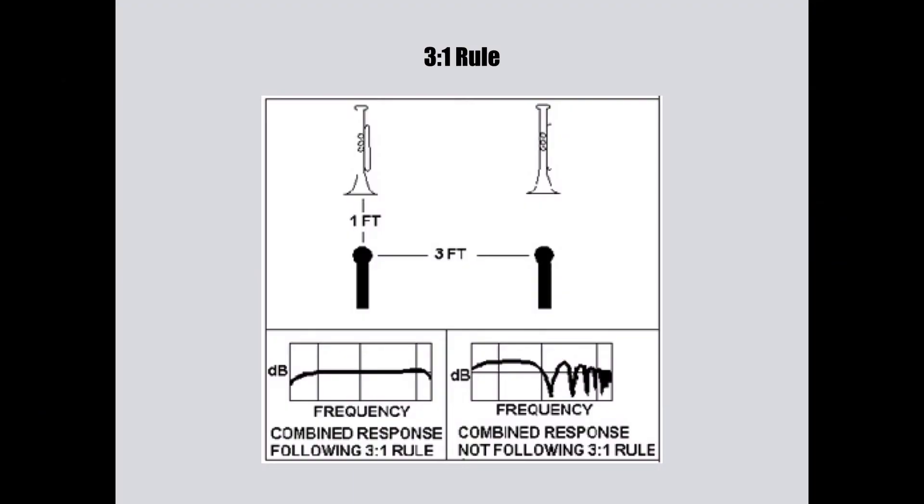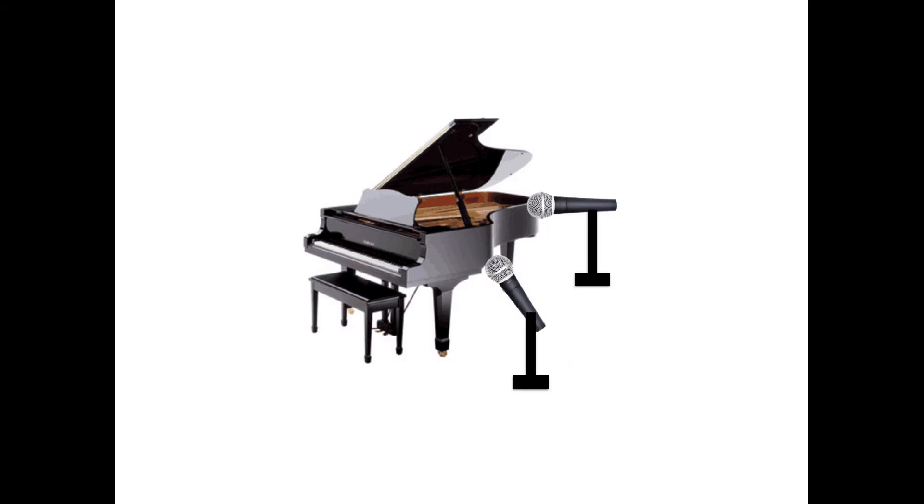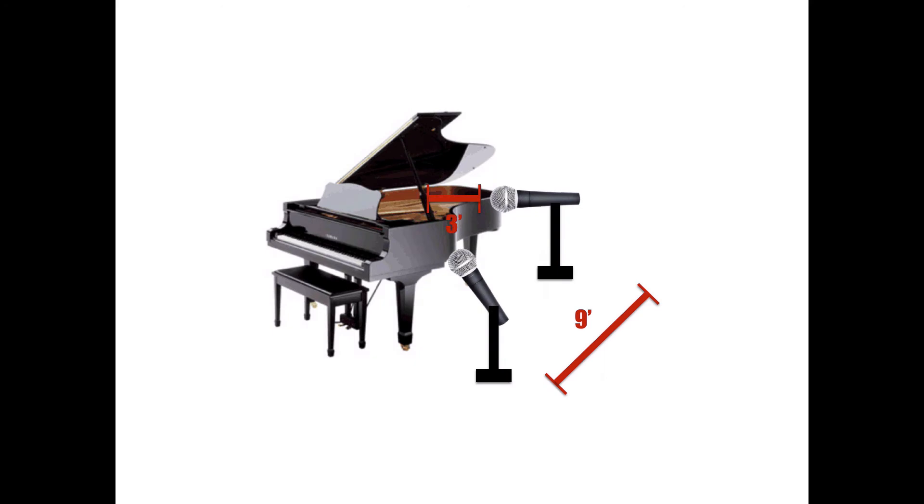One way that you can preemptively reduce phase issues while recording is by using the 3 to 1 microphone rule. This rule states that if you are using two microphones on one sound source, they should be at least 3 times the distance from each other than they are away from the sound source. So for example, let's say we are recording a grand piano, and we want to use two microphones so that we can fully capture the high and low end of the instrument. We start by placing these microphones 3 feet away from the strings on the piano. So that means to avoid as many phase issues between these two microphones, they should be at least 9 feet away from each other. This is definitely a good rule to keep in mind as it greatly helps cut back on phase issues and gives you a clearer recording from the get-go.